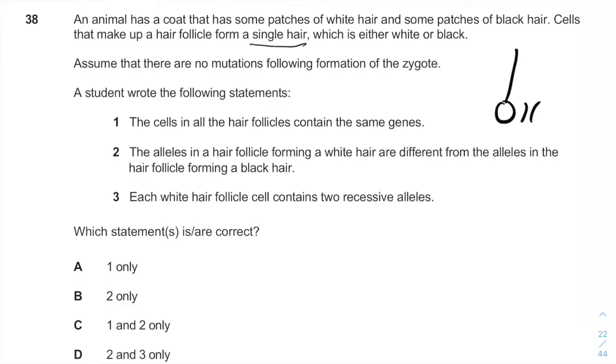Assume that there are no mutations following the formation of the zygote. A student wrote the following statement. One, the cells in all the hair follicles contain the same genes. They do contain the same genes. The question, like we saw in question number 37 and 36, in the previous questions, we do have the same genes. We don't have the same expressions of genes. So one is obviously true.